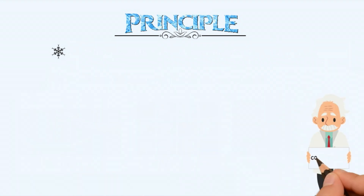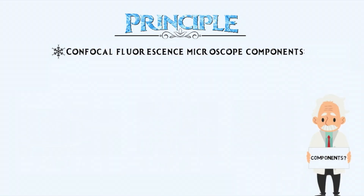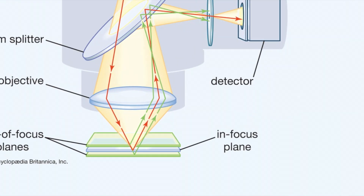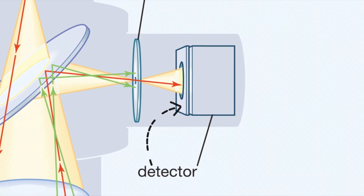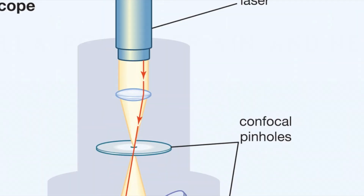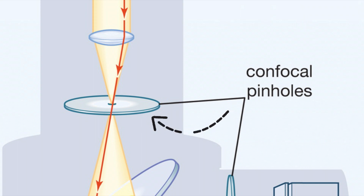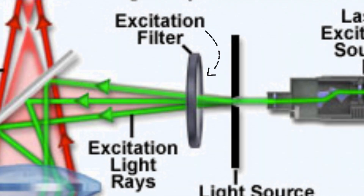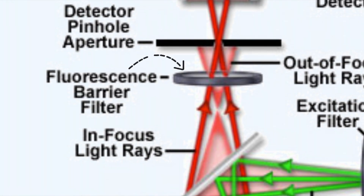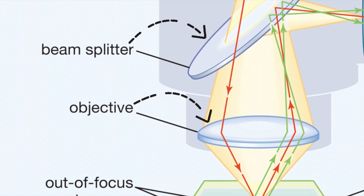What are the components of this microscopic technique? A confocal fluorescence microscope is comprised of the specimen, a photomultiplier, a laser excitation source, a light source pinhole aperture, a detection pinhole aperture, an excitation filter, a fluorescence barrier filter, a dichromatic mirror, and an objective.